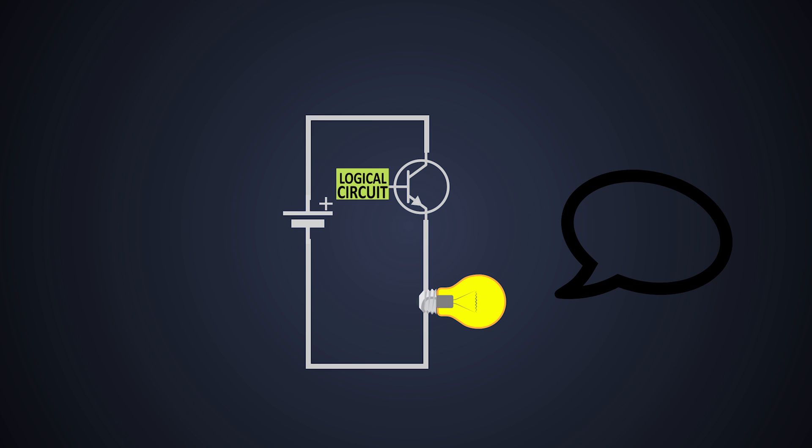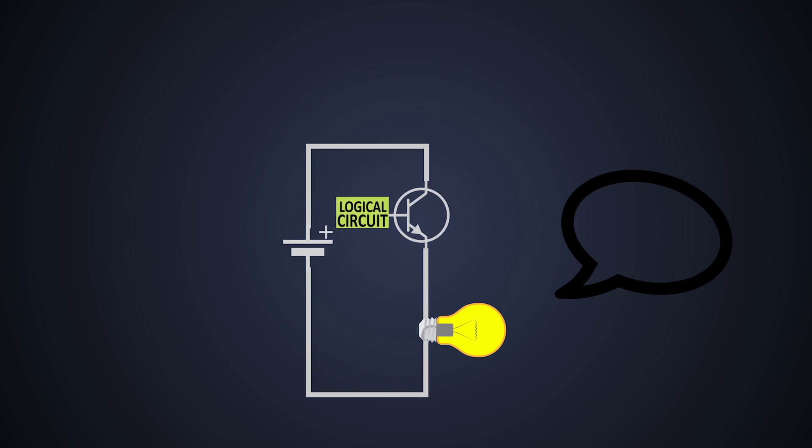So this is just an easy way to use an NPN BJT as a low side switch. In the next video we will see how we can use a PNP BJT as a high side switch. Till then, stay tuned.